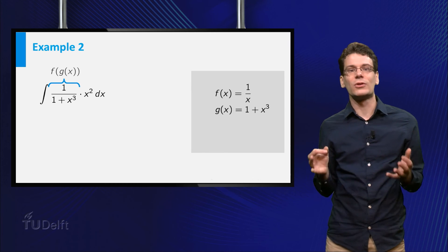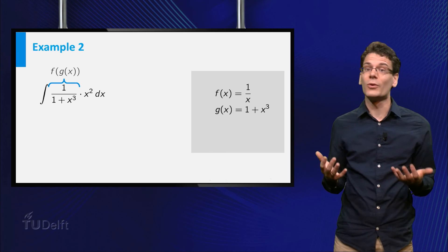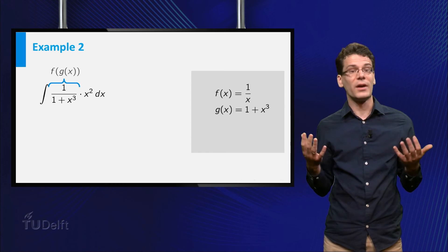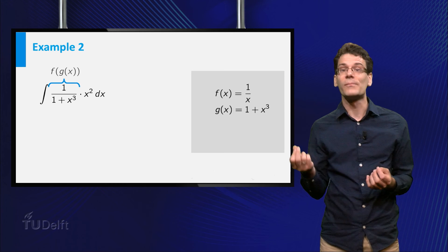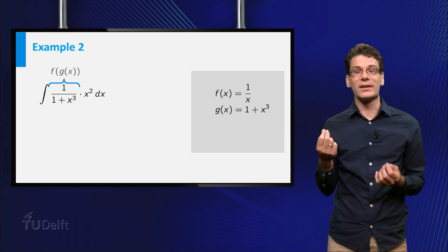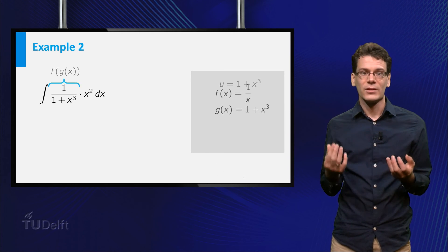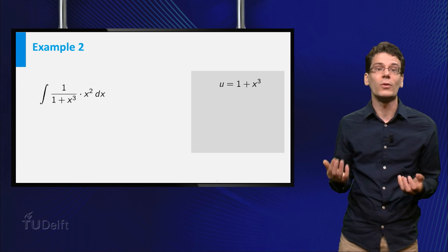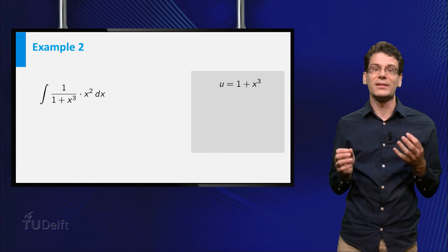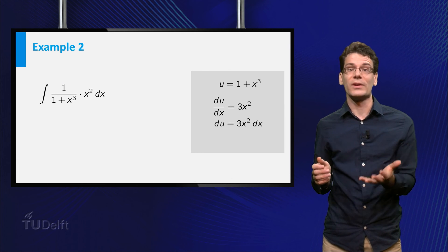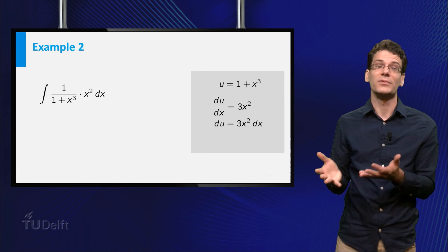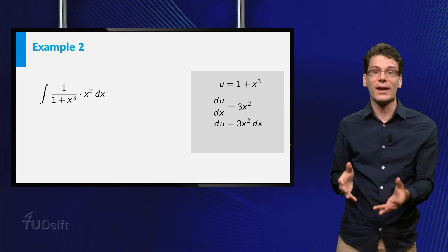When a composition occurs in an integral, it is often worthwhile to try to get rid of the inner function by using a substitution. So, in this case, we can try to make it simpler by using the substitution u equal 1 plus x cubed. It follows that du dx is equal to 3x squared. Therefore, du equals 3x squared dx.